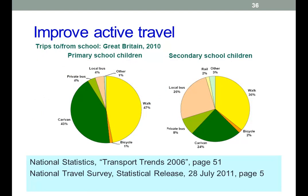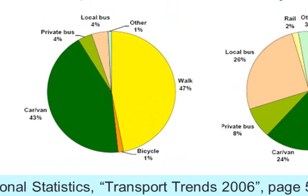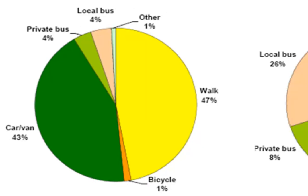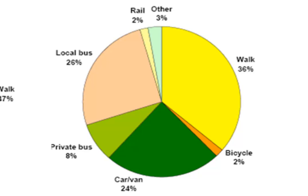Here's primary school children — the yellow and brownie sections represent walking or bicycling, not caravan. Primary school children taking walking and bicycling together: 48%. Secondary school children walking and bicycling together: 38%. So a 10% difference between the two groups.